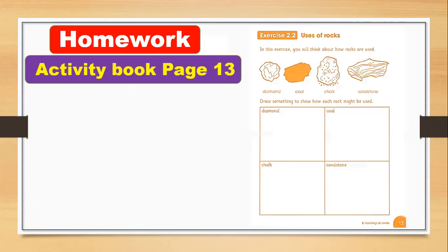Here is the homework. There are four types of rock: diamond, coal, chalk, and sandstone. These four types of rock may be soft or hard. You have to draw pictures showing how you can use these rocks. For example, from diamond you can make jewelry or use it in cutting machines, so draw a ring or any jewelry piece in the first box.